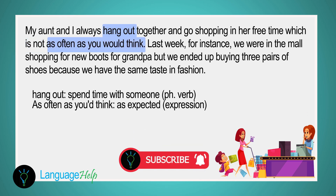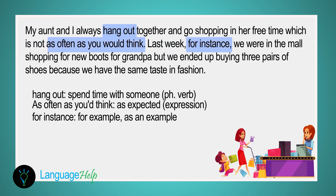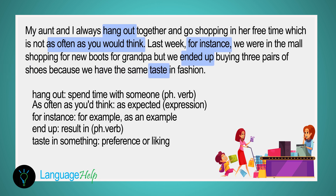The third cue is what kind of person he or she is. Our answer: 'My aunt and I always hang out together and go shopping in her free time, which is not as often as you would think. Last week, for instance, we were in the mall shopping for new boots for grandpa, but we ended up buying three pairs of shoes because we have the same taste in fashion.'